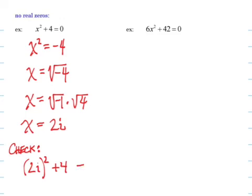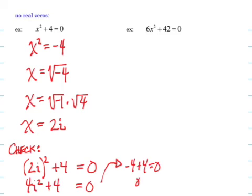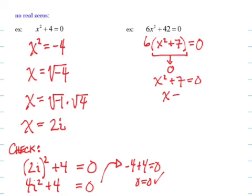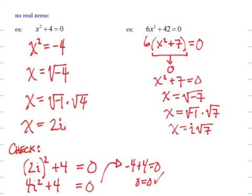I could check that if I wanted to. I plug in 2i for x, I square it, and get 4i squared plus 4. i squared is negative 1, and it comes out to be 0 equals 0, so my check works out. The next one, I factor out a 6 and get x squared plus 7 equals 0. By our zero products theorem, that means that this piece has to be 0. I set it equal to 0 and solve for x. x is the square root of negative 7, which becomes root negative 1 times root 7, or i root 7.